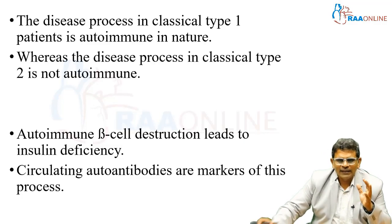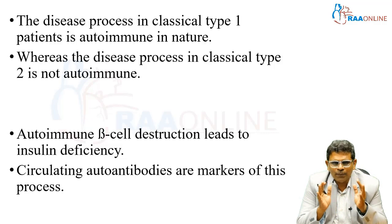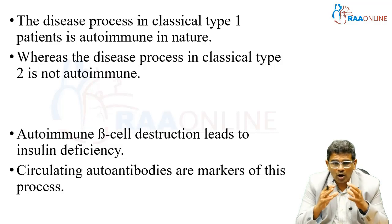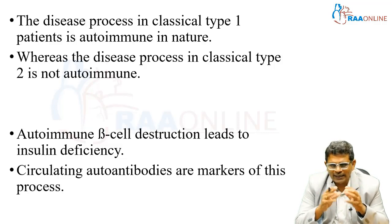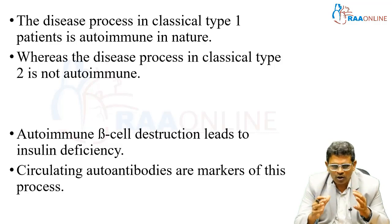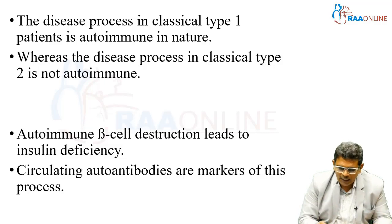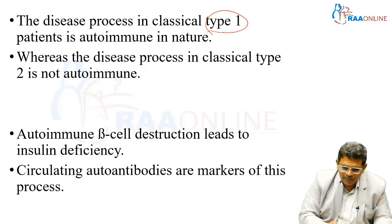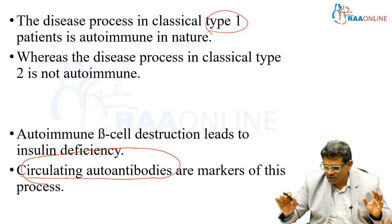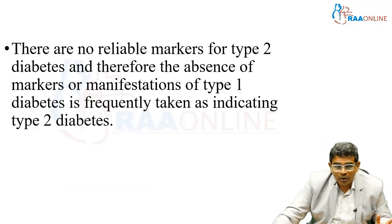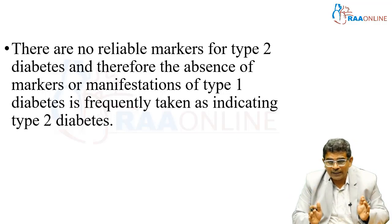In classical Type 1 diabetes, the disease process is autoimmune in nature, whereas in classical Type 2 diabetes it is not autoimmune. Autoimmune beta-cell destruction leads to insulin deficiency, where the beta cells are unable to produce any insulin at all. Circulating antibodies are taken as markers of Type 1 diabetes. In Type 2 diabetes, there are no reliable markers.